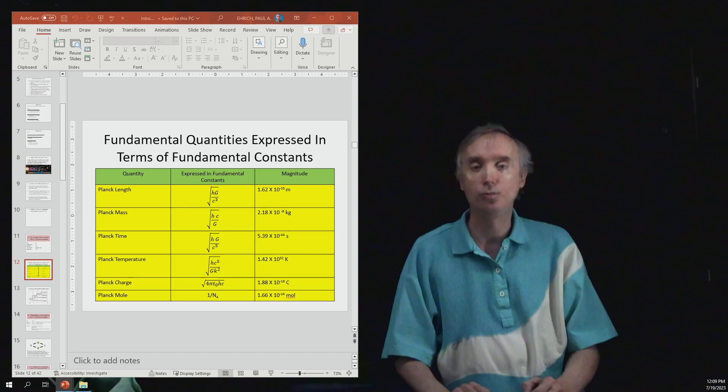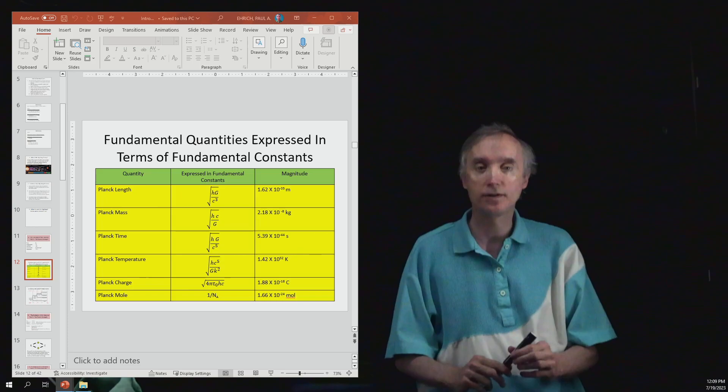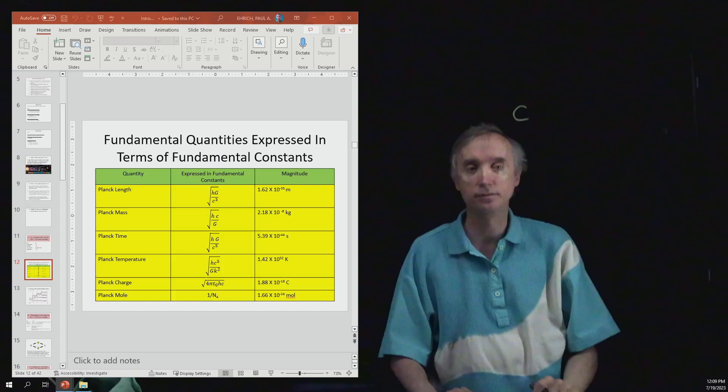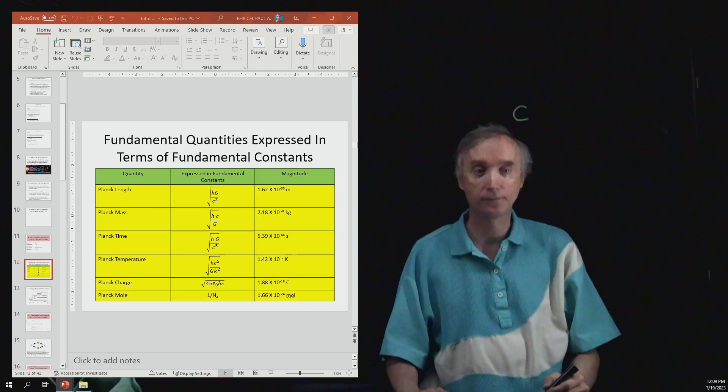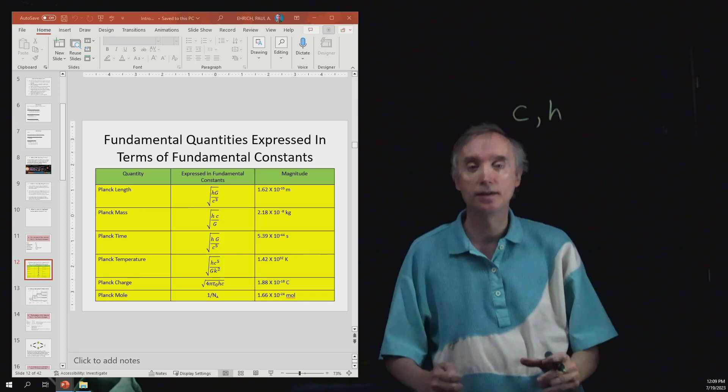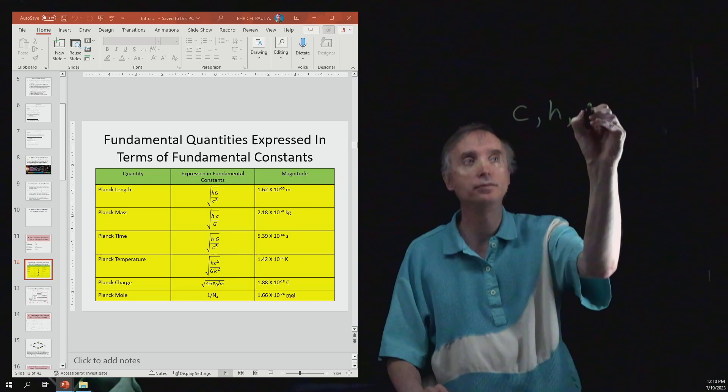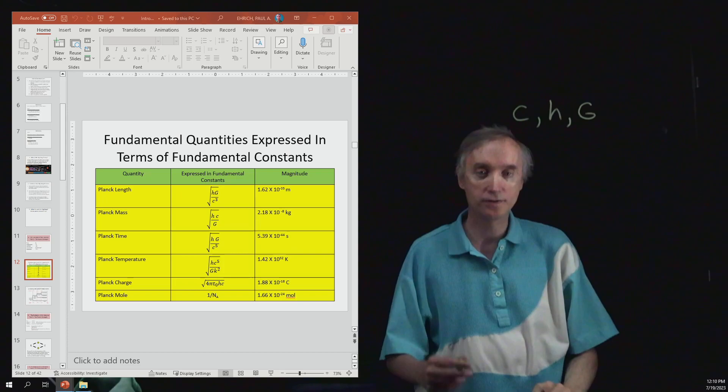From our previous lesson, we also learned that we can take fundamental constants of the universe and put them together to make fundamental quantities of the universe. For example, you have the speed of light C, which is a fundamental constant that comes from special relativity. And then you've got Planck's constant H, which is a constant that comes from quantum mechanics. And then you've got big G, which is the gravitational constant, and it comes from general relativity.